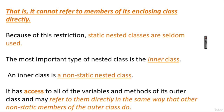The most important type of nested class is the inner class. An inner class is a non-static nested class. It has access to all the variables and methods of its outer class, and we can refer to them directly in the same way that other non-static members of the outer class do.